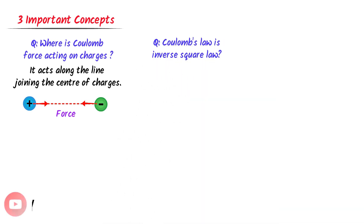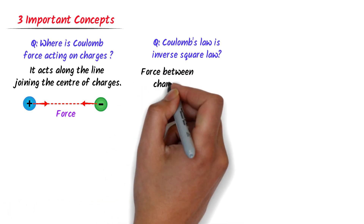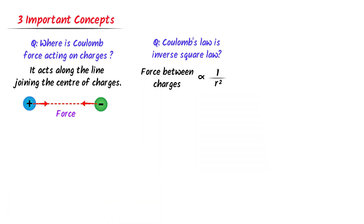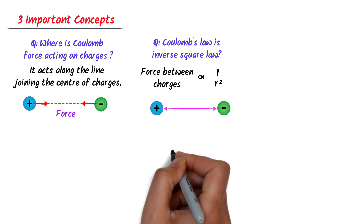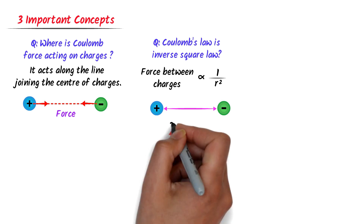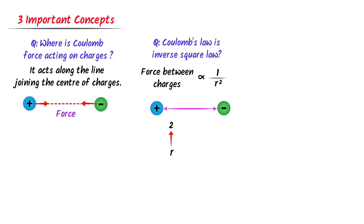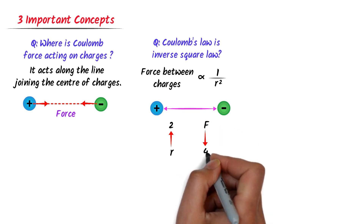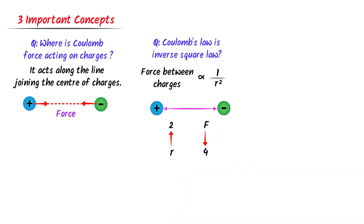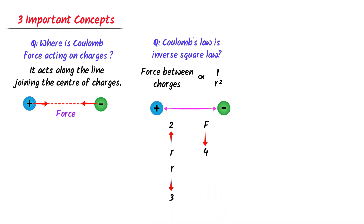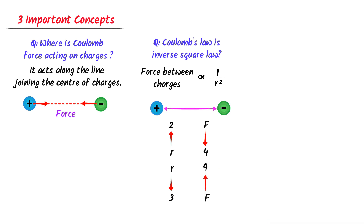Secondly, why is Coulomb's law called an inverse square law? The answer is: force between two charges is inversely proportional to the square of distance between them. For instance, if I increase the distance two times, the force decreases four times. If I decrease the distance three times, the force increases nine times. Therefore, we call it the inverse square law.